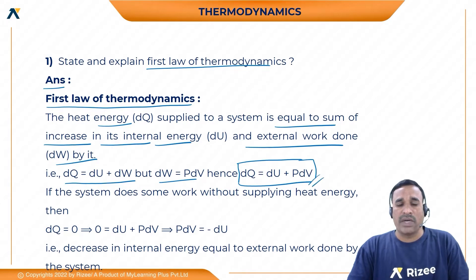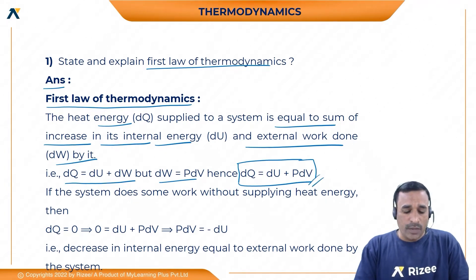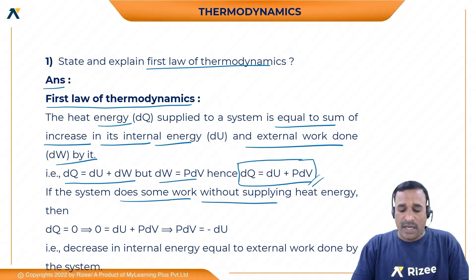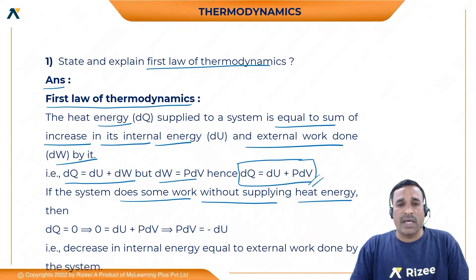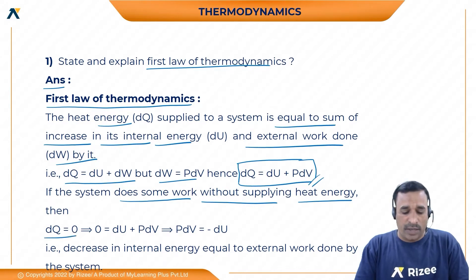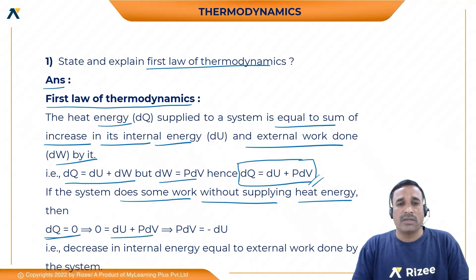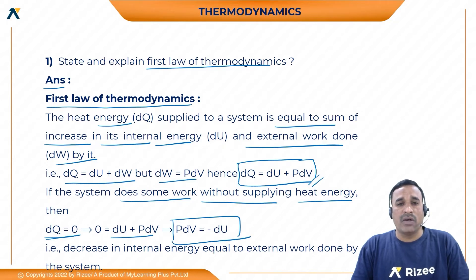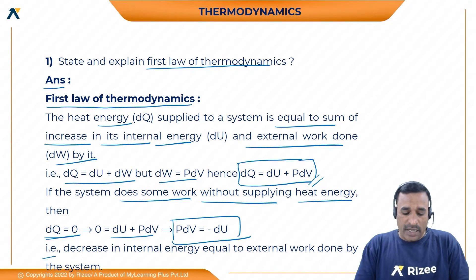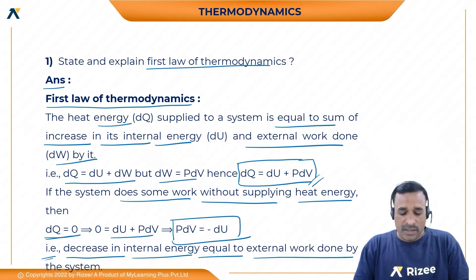Now, considering a special condition: if the system does some work without any heat energy being supplied, then dQ is equal to zero. Applying the first law, zero equals dU plus pdV, which gives us pdV equals minus dU. That means the decrease in internal energy equals the external work done by the system.